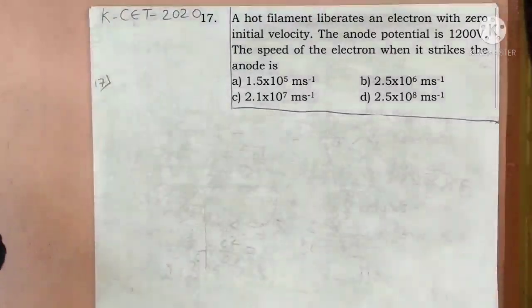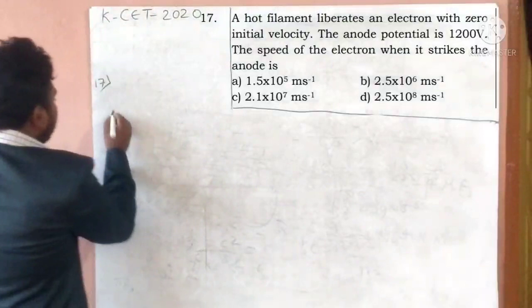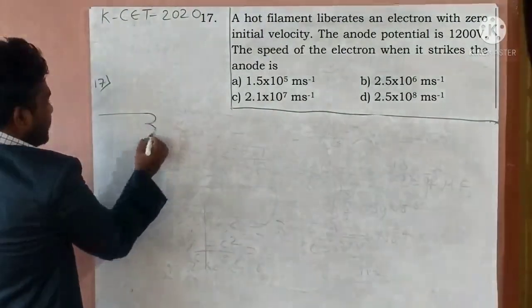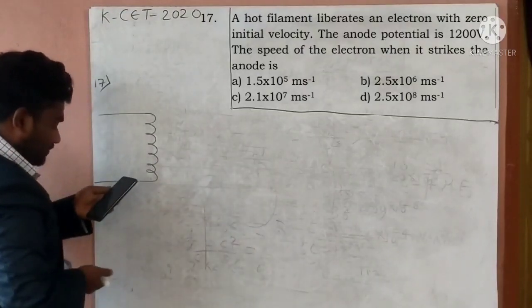17th question. Look at the 17th question. 17th question. What is it? Question on what is it? Hot filament is. Yes. We are having one filament. It liberates an electron. Now,